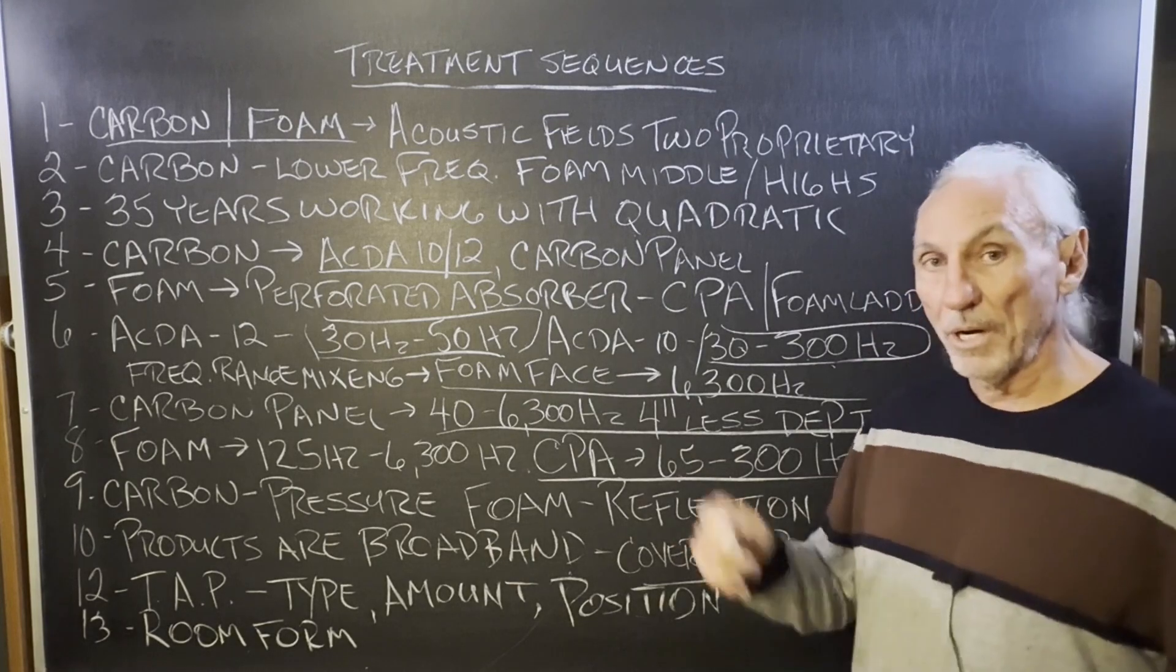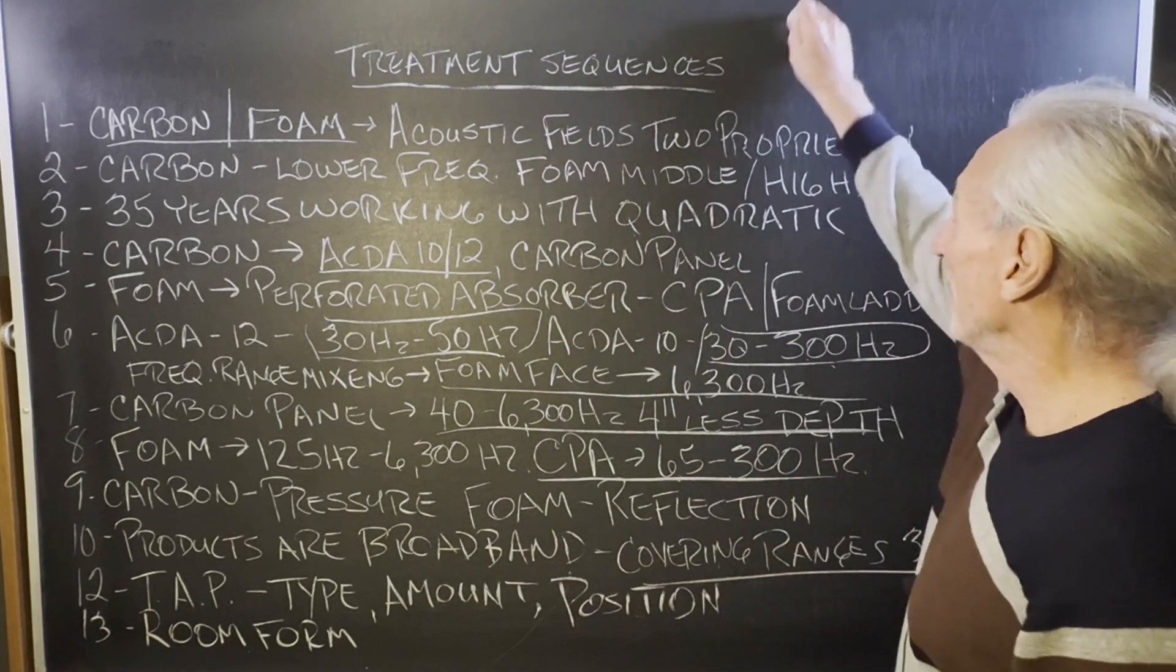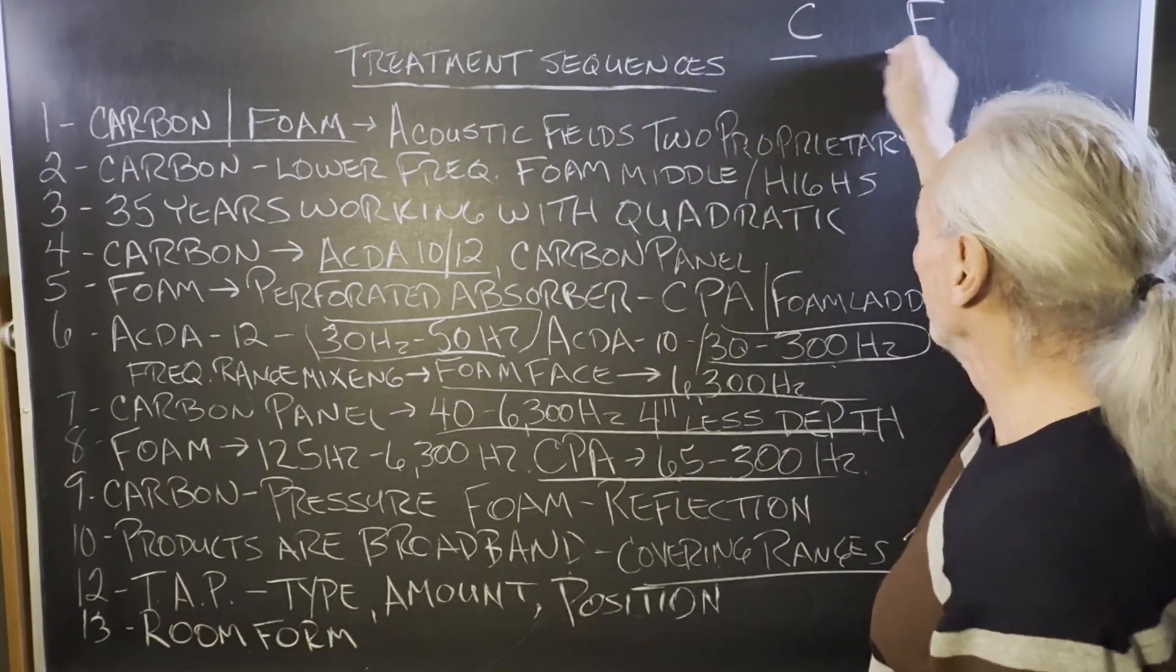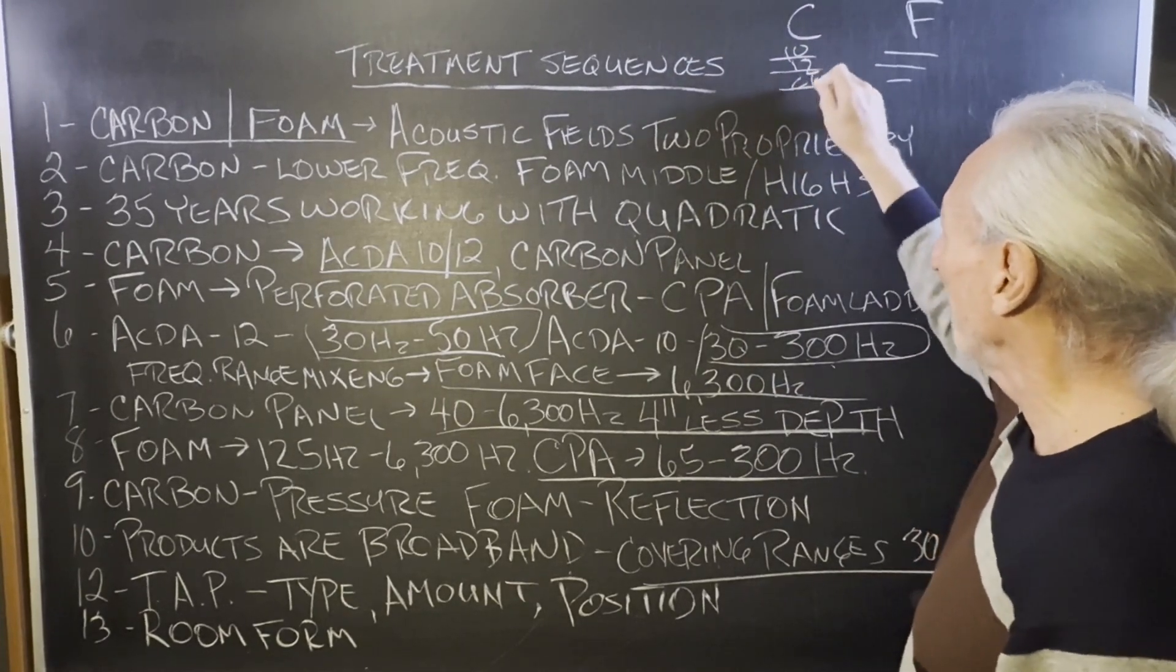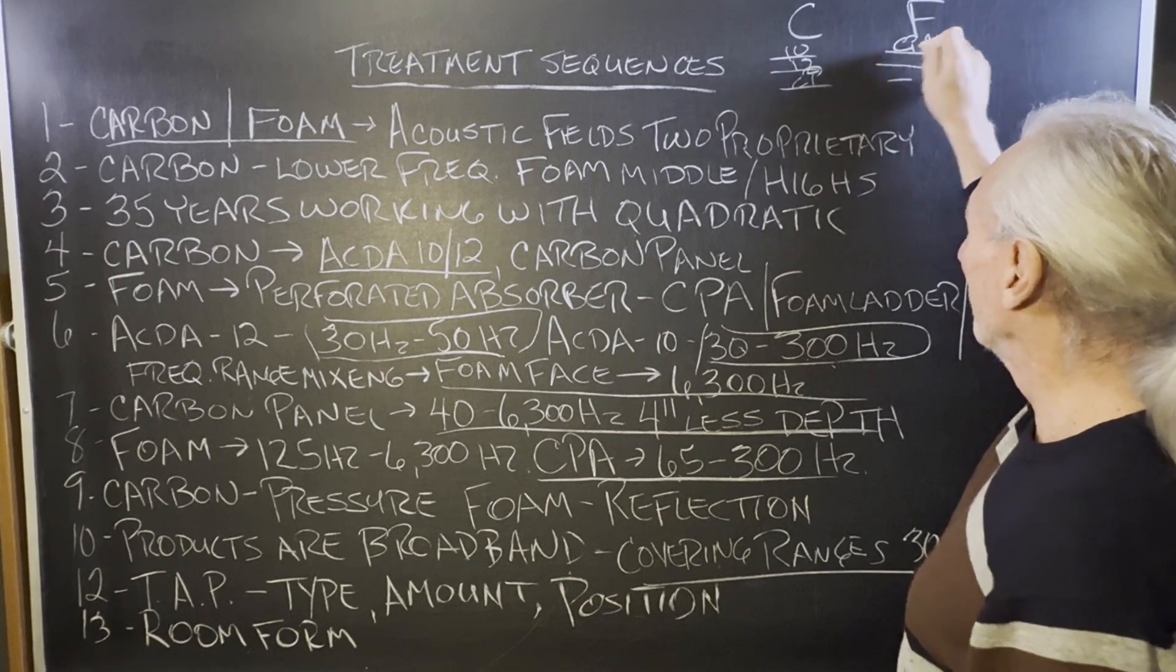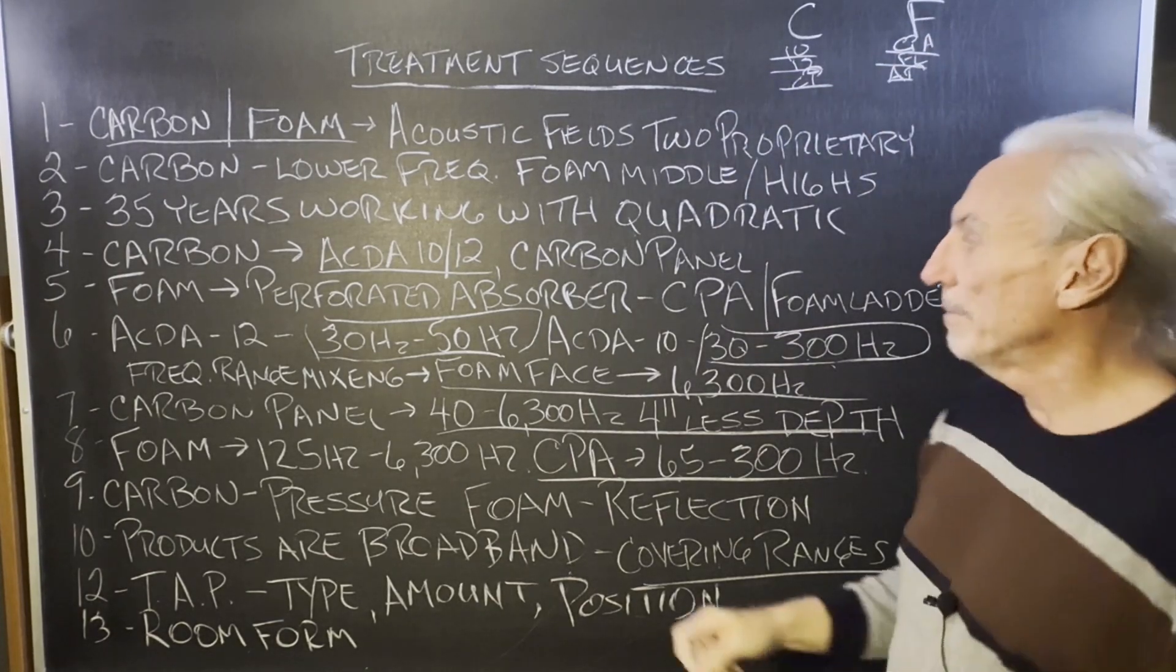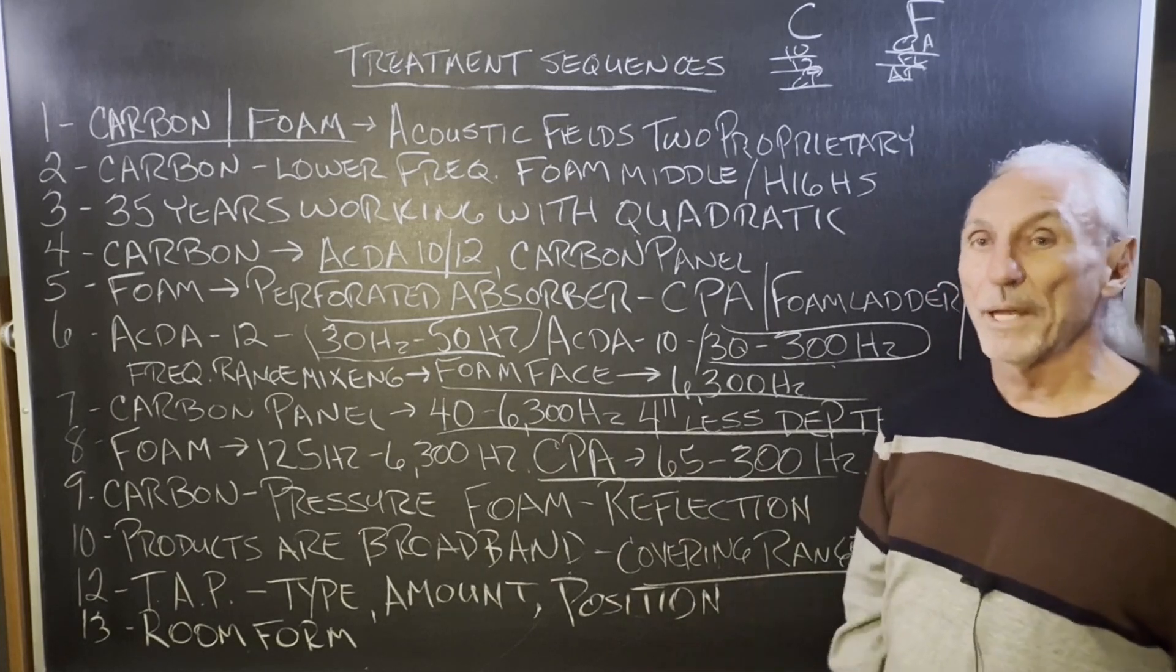Treatment sequences, carbon and foam. Just remember, those are our two main headings, right? And then everything else kind of falls under them. You got the 10s, the 12s, the carbon panel. Here you have the CPA, the foam ladder, the acoustic panels, because they have the fabric on them. So, it's kind of like room. It's pressure and reflection. It's two main categories.